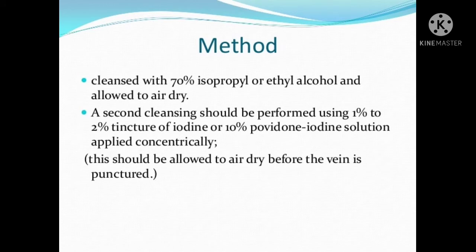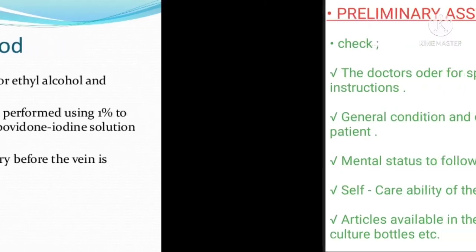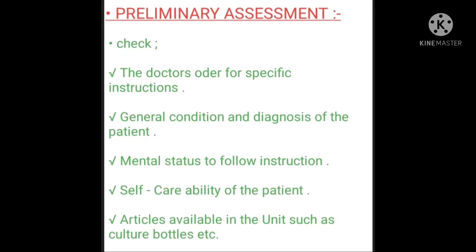Method: the site is first cleaned with 70% alcohol and allowed to air dry. A second cleaning should be performed using 1% to 2% tincture of iodine or 10% povidone-iodine solution applied concentrically. This should be allowed to air dry before the vein is punctured.